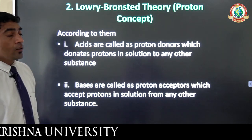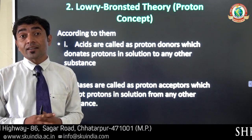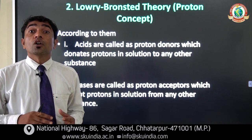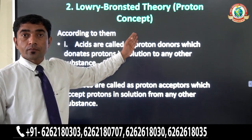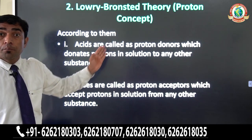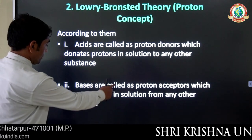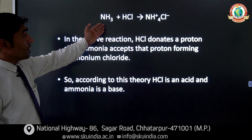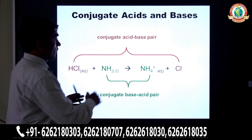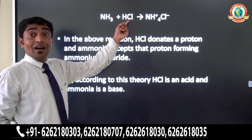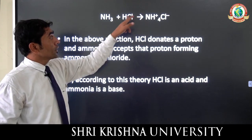The Brønsted-Lowry theory is also known as the proton concept. According to Brønsted-Lowry, acids are substances which donate hydrogen ions (protons), and bases are substances which accept hydrogen ions. For example, when ammonia reacts with HCl, ammonia accepts a proton — so ammonia is the base. HCl donates its proton, so it is the acid.